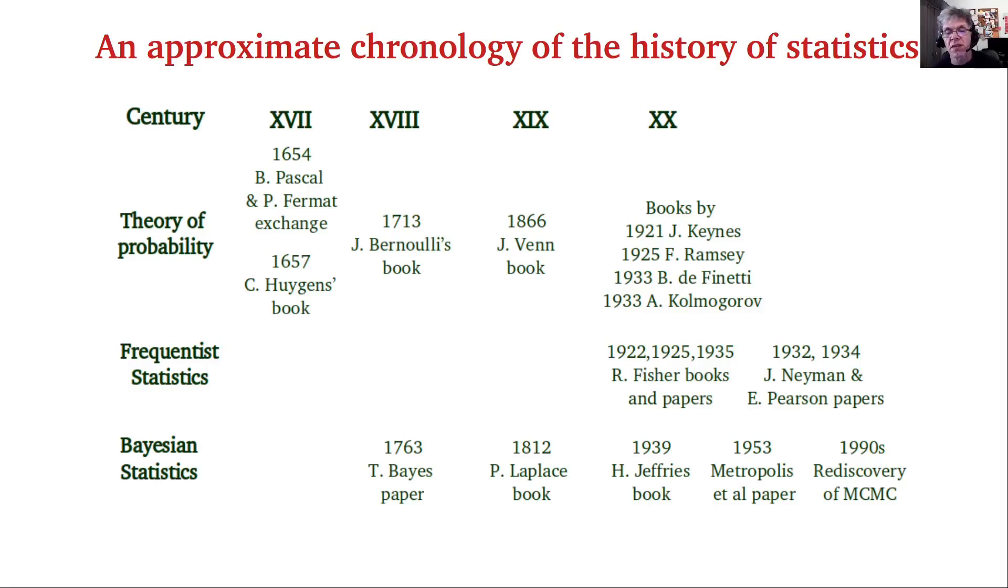In the meantime, for Bayesian statistics, we can mention Bayes' paper, Laplace's book. The first real book devoted to Bayesian statistics was published in 1939, Harold Jeffreys' book. Then in 1953, an algorithm was published in an obscure journal of physical chemistry. This algorithm is called MCMC; we are going to discuss it in a minute. It was rediscovered in the 1990s, and this was a game changer as far as Bayesian statistics is concerned.